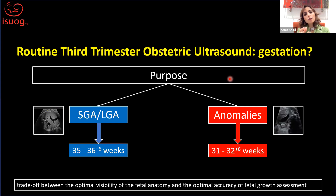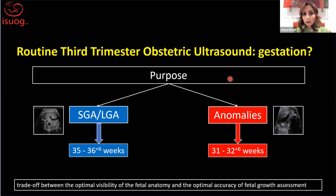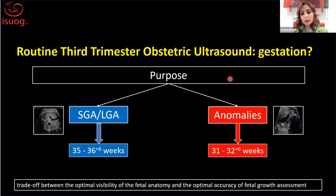If your focus is mainly about growth abnormalities, you should plan the routine third trimester ultrasound scan at around 35 to 36 weeks. But if you want to look for anomalies, it should be earlier, at 31 to 33 weeks.